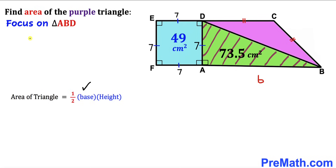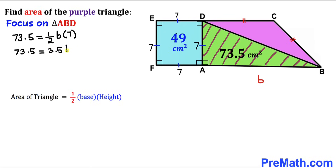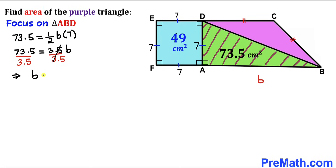Filling in the formula: 73.5 equals one half times b times 7. Simplifying, 73.5 equals 3.5 times b. Dividing both sides by 3.5, the base b turns out to be 21 centimeter. So the base of the green triangle is 21 centimeter.